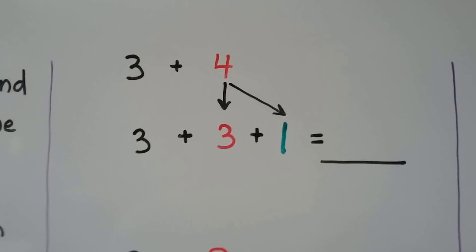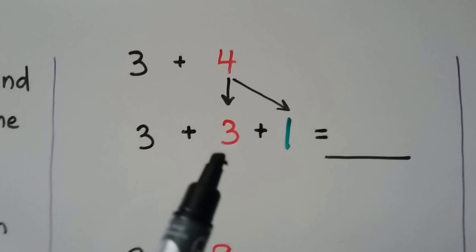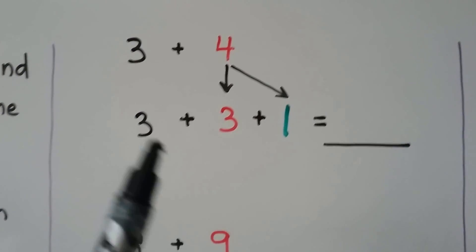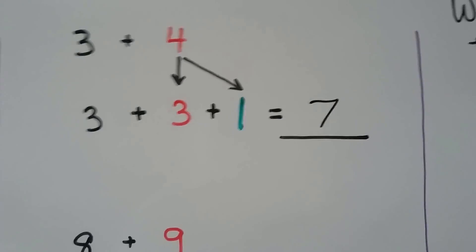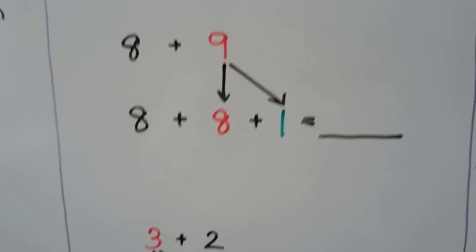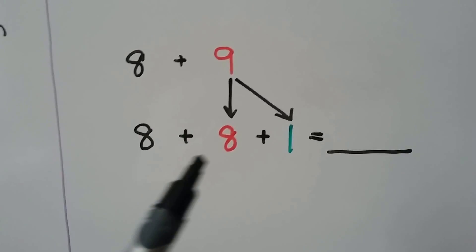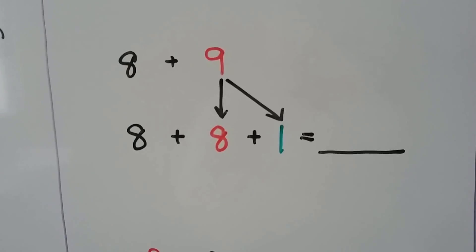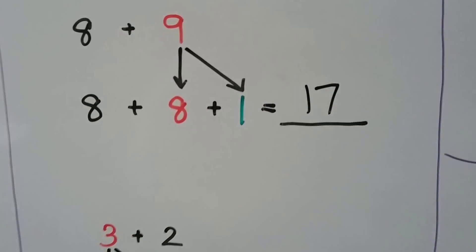8 plus 9: we could break the 8 into a 1 and an 8, giving us doubles. Or we could break the 9 into an 8 plus 1. If we know 8 plus 8 is equal to 16, we can add the one more and get 17. Which means 8 plus 9 is equal to 17... 18.